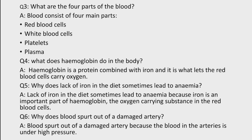Question No. 4: What does hemoglobin do in the body? Answer: Hemoglobin is a protein combined with iron, and it is what lets the red blood cells carry oxygen throughout the body.